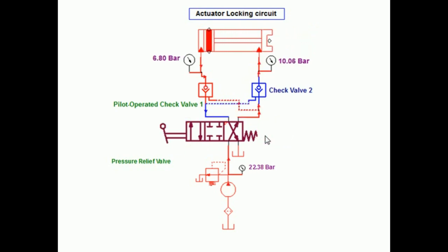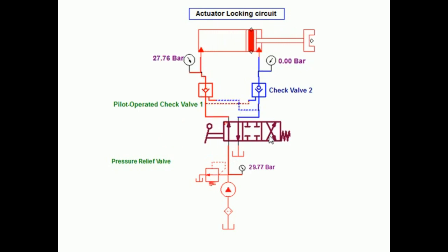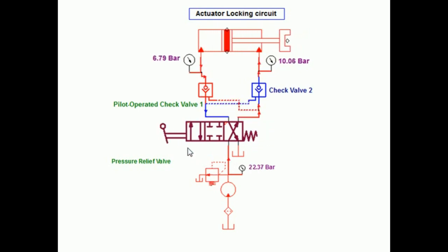An external force acting on the piston rod will not move the piston in either direction because reverse flow through either pilot check valve is not permitted under this condition.